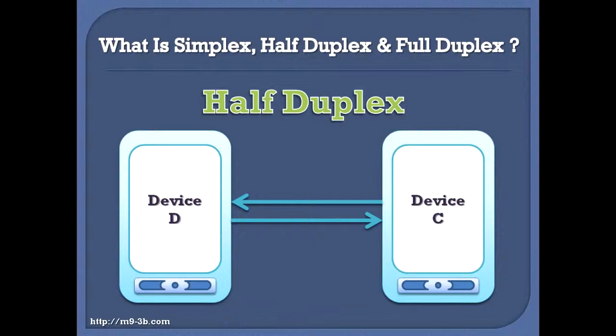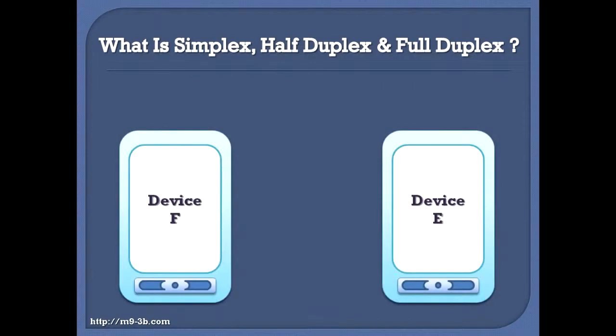Now if we have other two devices, Device E and Device F, if both devices are transmitting and receiving at the same time, then the communication between them is called full duplex.